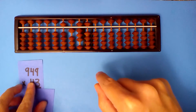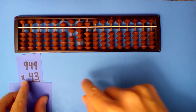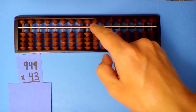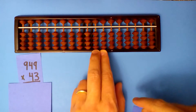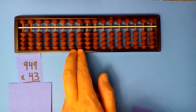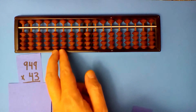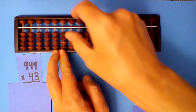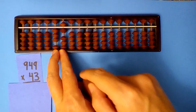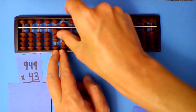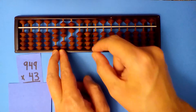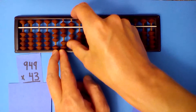949 times 43. Tenths and hundredths, 5 digits: 1, 2, 3, 4, 5. 4 times 9 is 36, 4 times 4 is 16, 4 times 9 is 36.